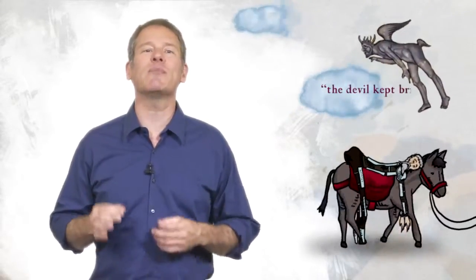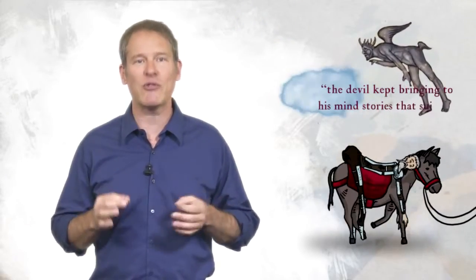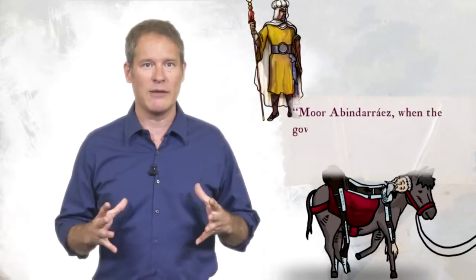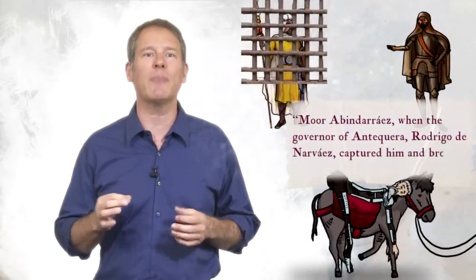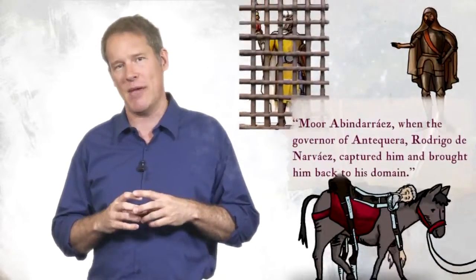Suddenly, Don Quixote forgets Baldovinos and identifies with none other than the moor Abindarraeth, when the governor of Antequera, Rodrigo de Narvaez, captured him and brought him back to his domain. So, the details of our narrative continue to draw a southerly trajectory. Don Quixote identifies with a moor.